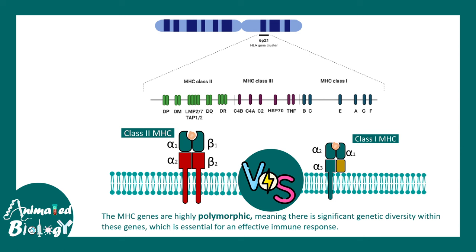The entire MHC gene is present on chromosome number 6 and is known as the HLA cluster, or human leukocyte antigen cluster. This cluster is around 4,000 kilobase pairs long and contains different variations of class 1, class 2, and class 3 MHC molecules.